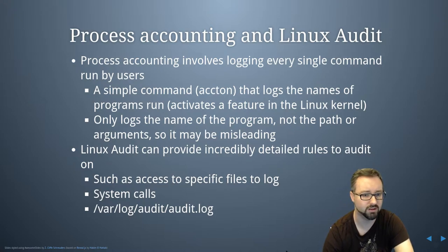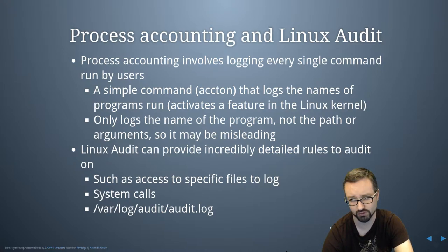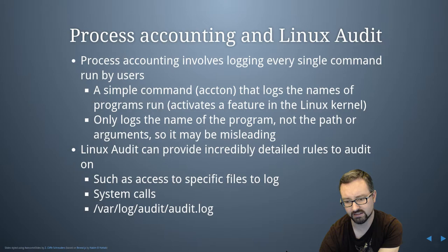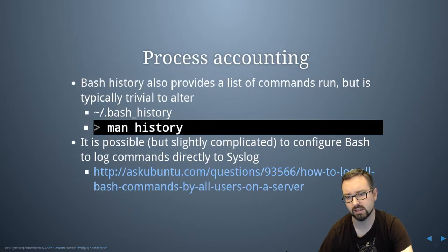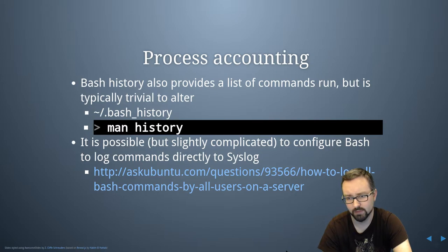Process accounting has been around for a long time on Linux systems, but the biggest downside is it doesn't actually tell you all the arguments used to run the tool — just the command itself. The newer Linux audit subsystem provides incredibly detailed rules that you can specify to audit on, so you can specify access to specific files — every time a certain file is accessed you can create a log entry. You can have it tell you about certain system calls and all that stuff will be stored in /var/log/audit/audit.log. Bash history also provides a list of commands that have been run by any user that's using bash, which is a standard shell on most Linux systems.